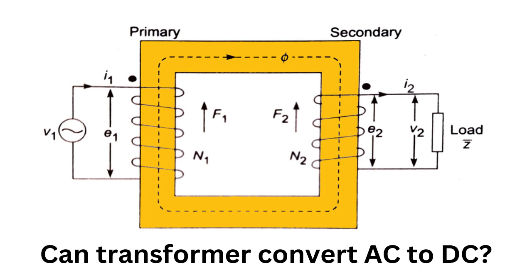When an alternating current flows through one coil, it creates a changing magnetic field that induces a voltage in the other coil. This process of electromagnetic induction is what allows a transformer to change the voltage level of an alternating current.